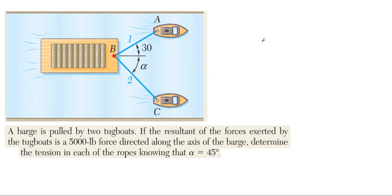We'll have our x-axis and our y-axis. We have tugboat A pulling in this direction, which is 30 degrees off the x-axis.